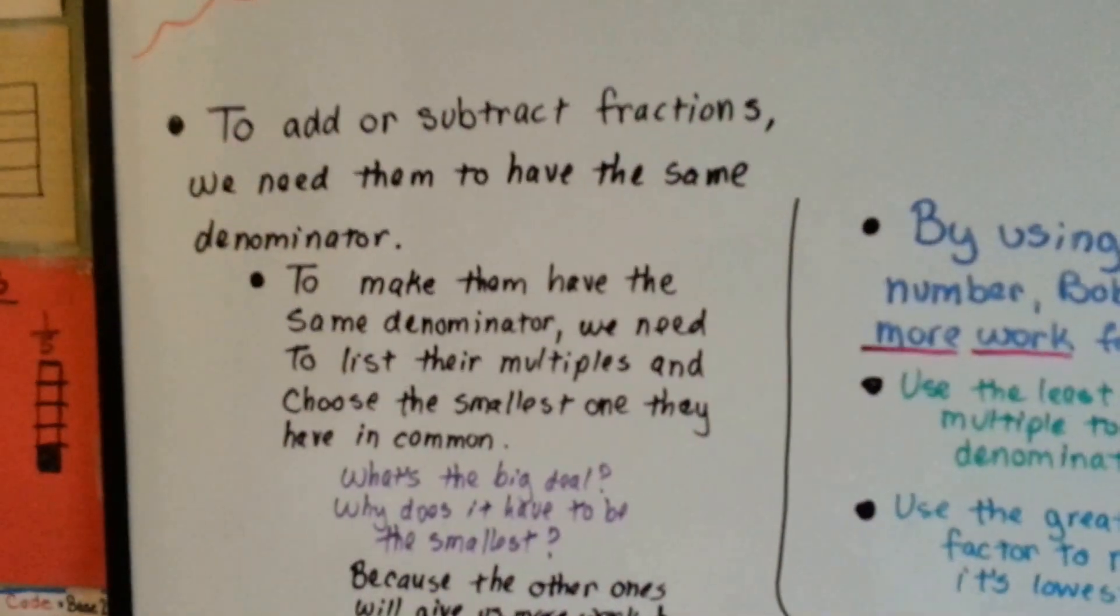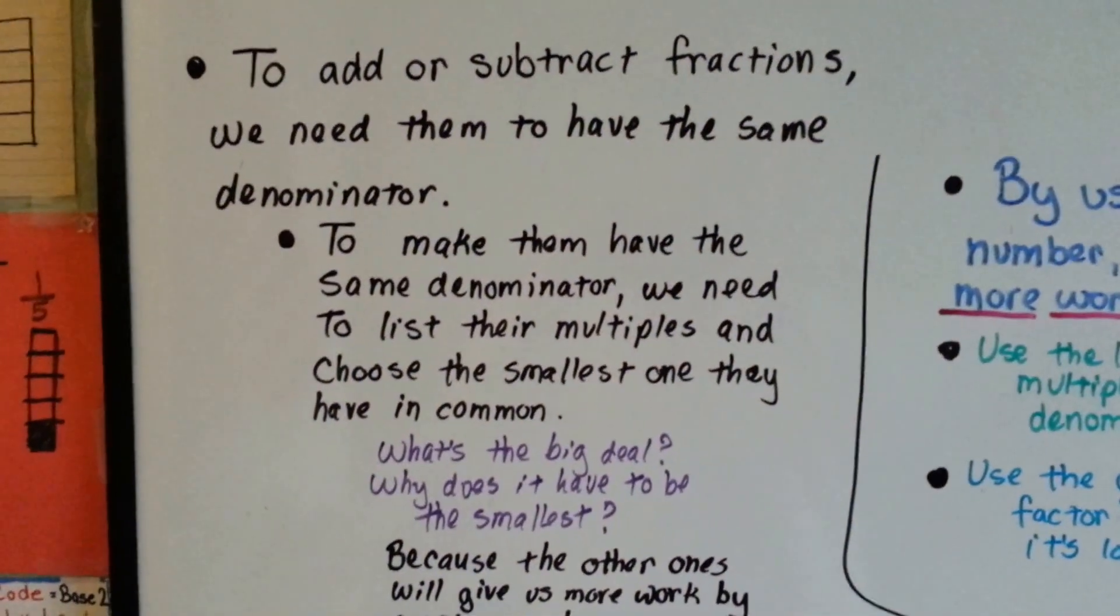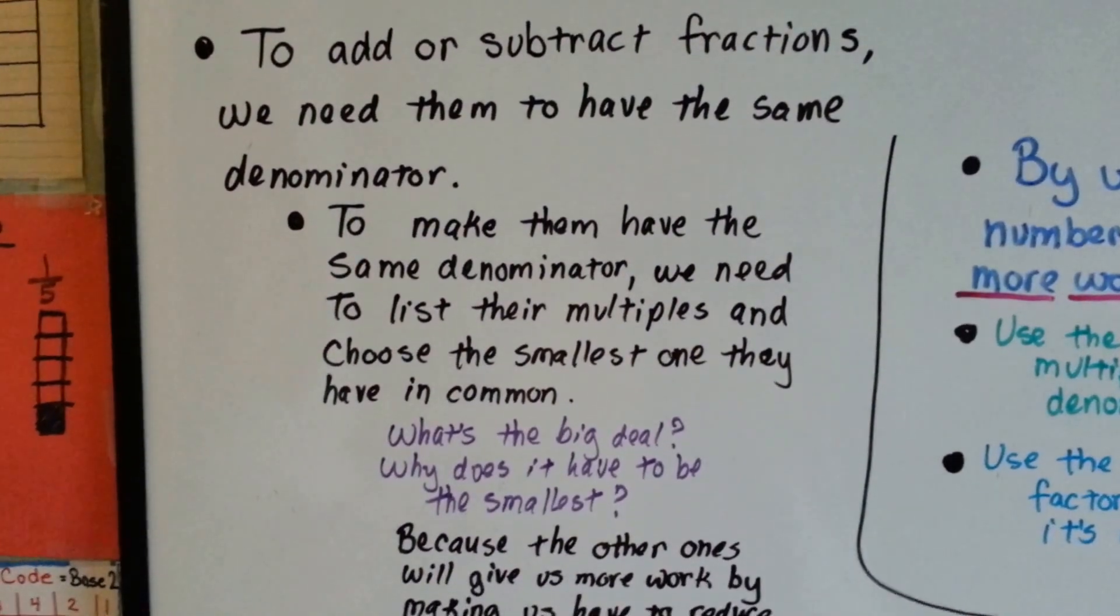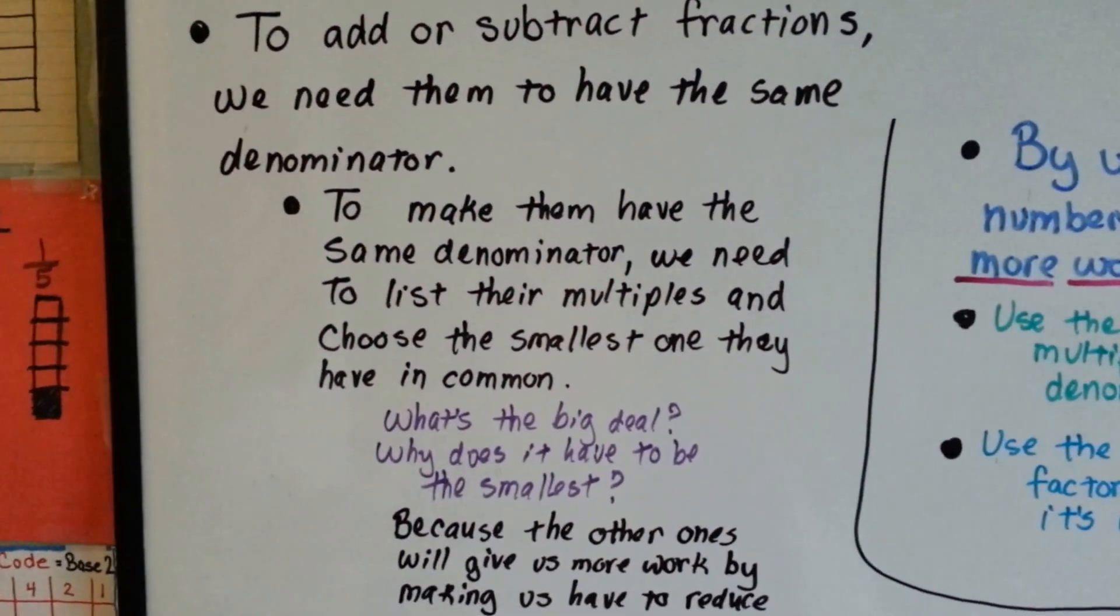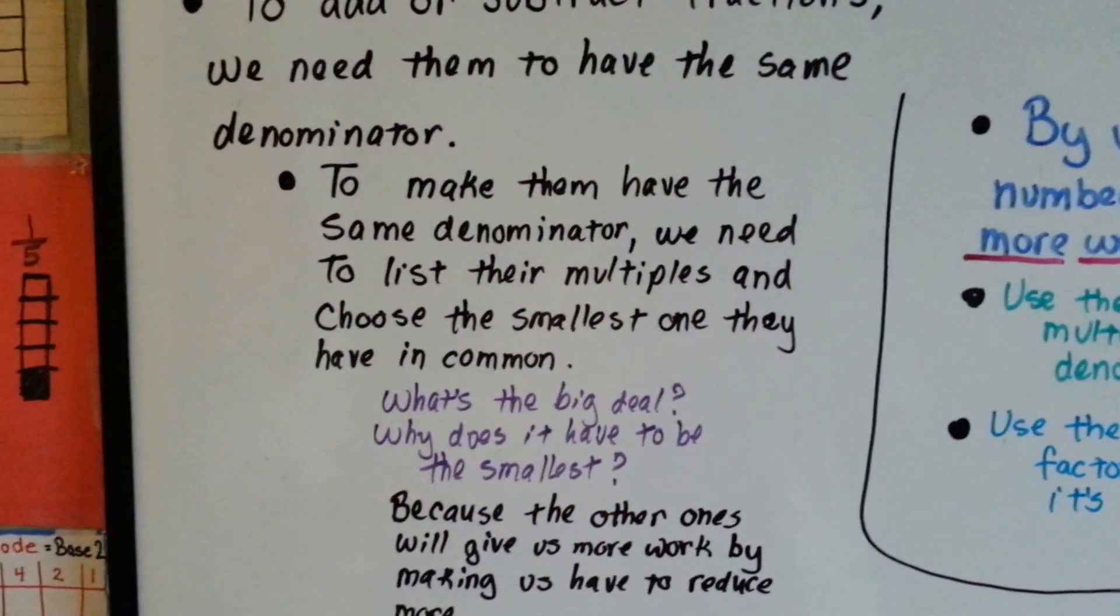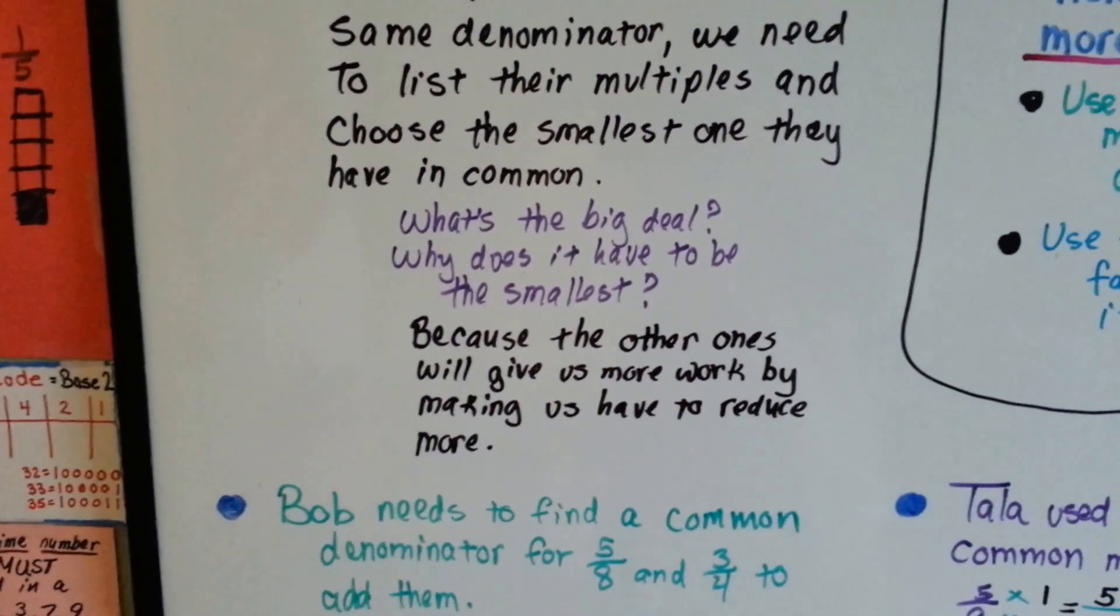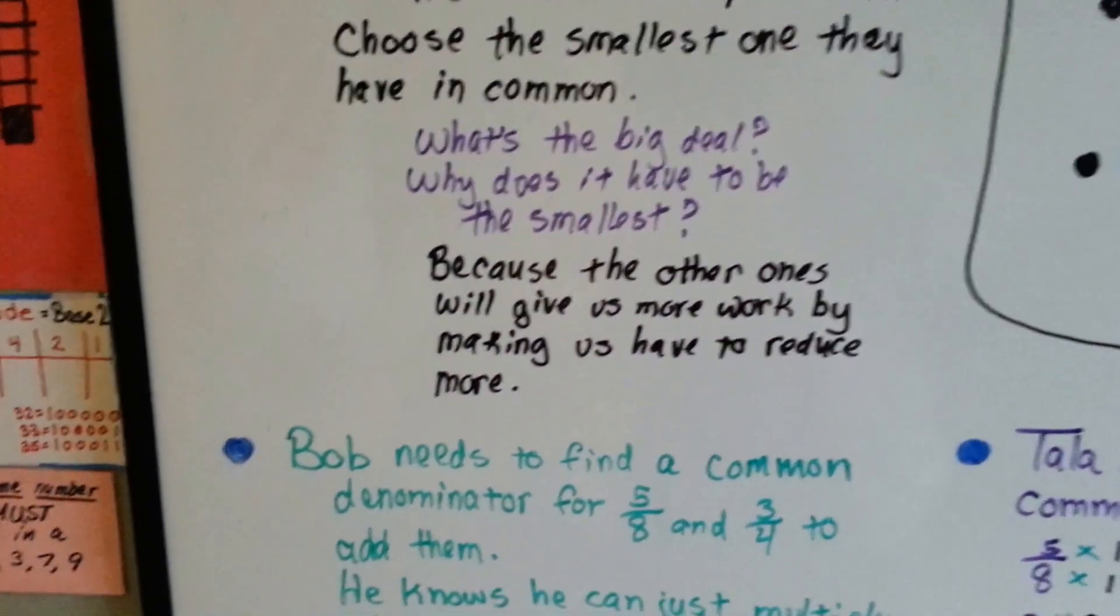To add or subtract fractions, we need them to have the same denominator. To make them have the same denominator, we need to list their multiples and choose the smallest one they have in common. What's the big deal? Why does it have to be the smallest? Because the other ones will give us more work to do by making us have to reduce more.